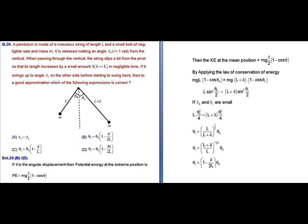Applying the law of conservation of energy: mgl(1 − cosθ₀) = mg(l + δ)(1 − cosθ₁). Instead of (1 − cosθ), we write 2sin²(θ/2), which gives: l × 2sin²(θ₀/2) = (l + δ) × 2sin²(θ₁/2).